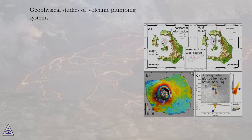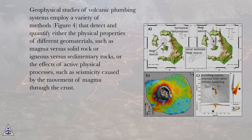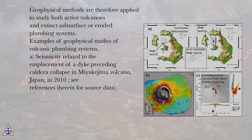Geophysical studies of volcanic plumbing systems employ a variety of methods (figure 4) that detect and quantify either the physical properties of different geomaterials, such as magma versus solid rock or igneous versus sedimentary rocks, or the effects of active physical processes, such as seismicity caused by the movement of magma through the crust. Geophysical methods are therefore applied to study both active volcanoes and extinct subsurface or eroded plumbing systems.